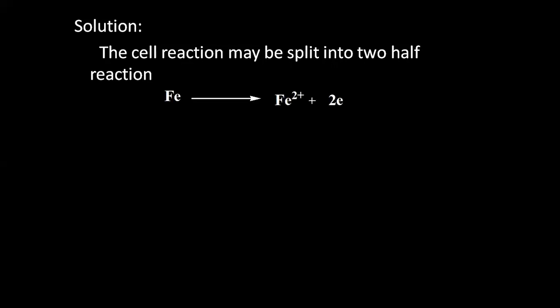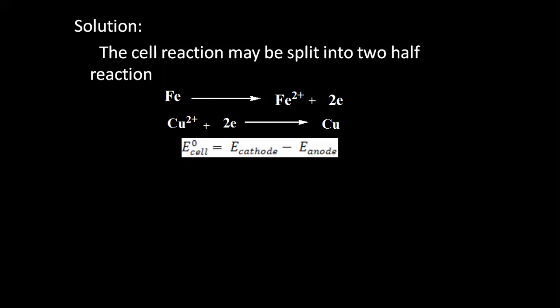If a cell reaction is given, we can always split it into two half reactions. Fe → Fe²⁺ means iron is losing electrons, which is oxidation. Cu²⁺ gains two electrons to give Cu, which is reduction. So iron is getting oxidized and copper is getting reduced. We know that E° cell = E° cathode − E° anode. Once we know that, we have to identify which one is cathode and which one is anode.